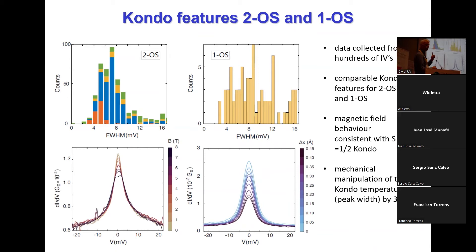You can also manipulate the Kondo temperature. By stretching, you can change the width and height of this peak, and you can start playing with all the parameters. It is strange, though, that we have a diradical that shows only S=½ Kondo. I will come back to that in a moment.